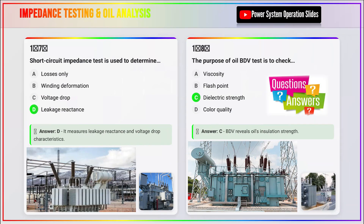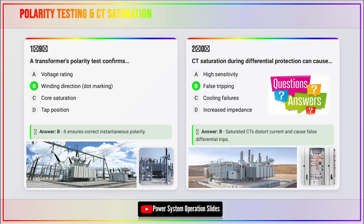Best practices include establishing a baseline for each transformer when new, maintaining consistent testing methods for accurate trend analysis, and implementing a systematic approach to testing frequency based on transformer criticality. Documentation should include test conditions, equipment used, and results with appropriate temperature corrections. By following these comprehensive testing procedures with proper safety precautions, utilities can maximize transformer reliability, extend service life, and prevent unexpected failures that could impact system reliability.